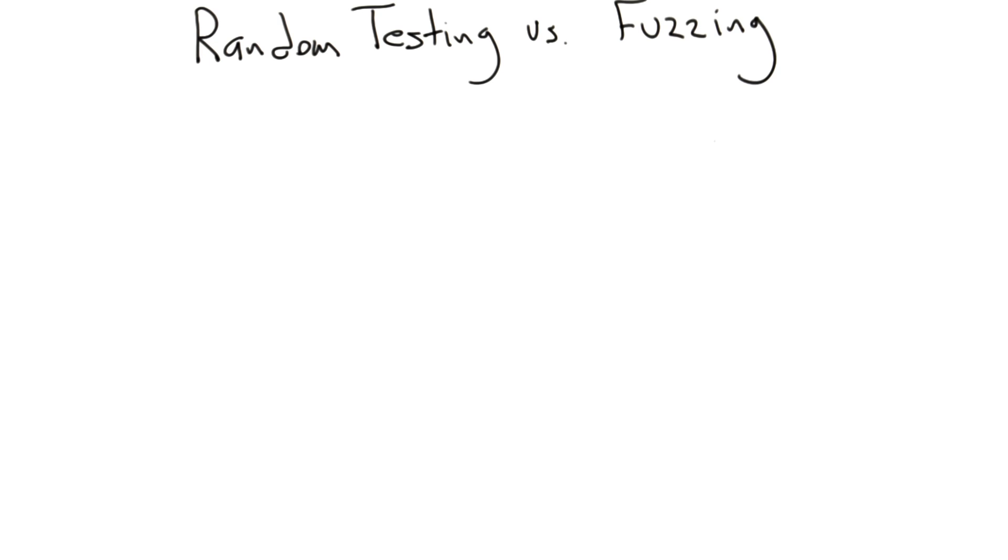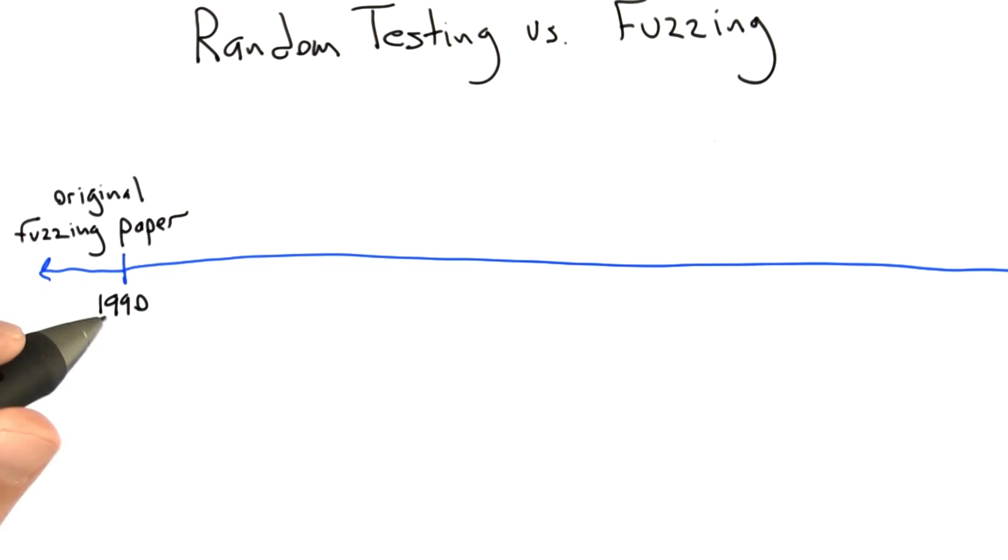Let's go back in time to 1990 when Professor Bart Miller and his students published a paper called An Empirical Study of the Reliability of Unix Utilities. What they did as part of the fuzzing effort was provide completely random data to a bunch of Unix command line utilities.